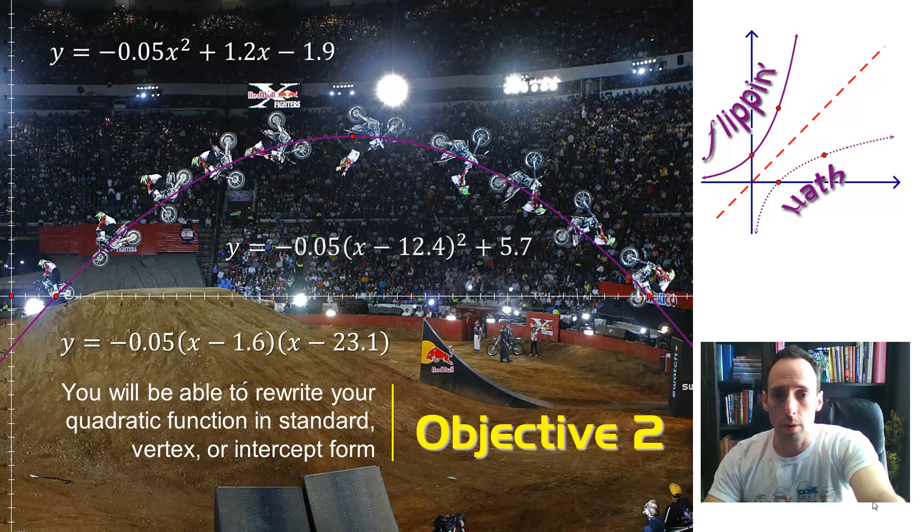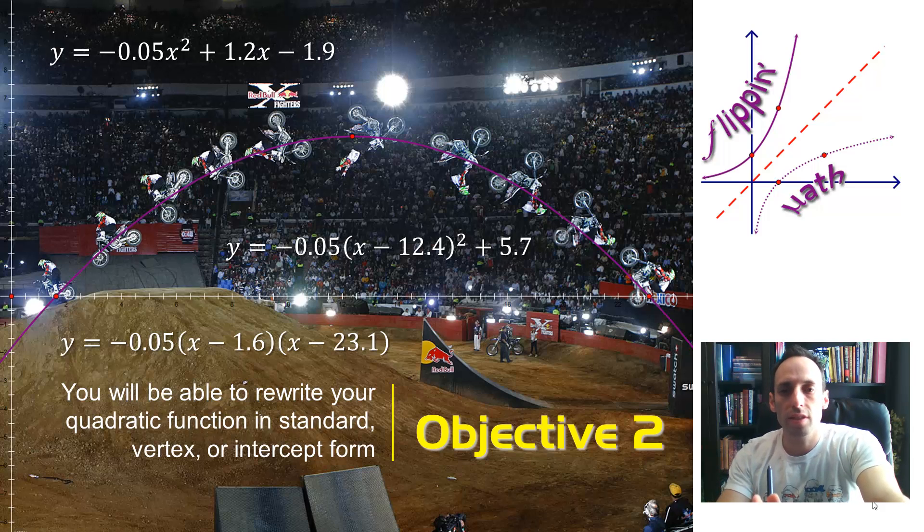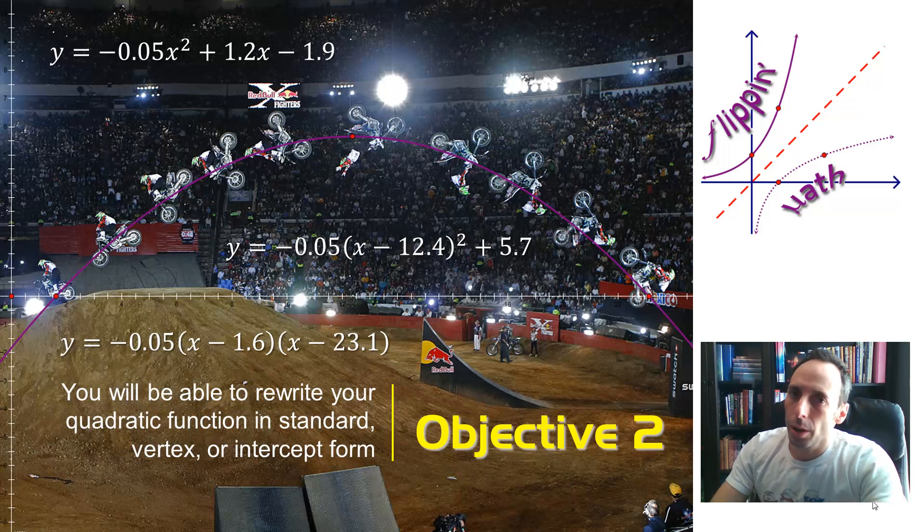Or maybe we want it in vertex form, right there in the middle. And notice that you have that set of parentheses, that x minus 12.4 quantity squared. That's going to come from completing the square, so we'll probably have to do that.